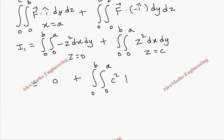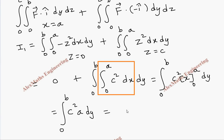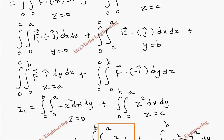Substituting z=c, the second part becomes double integral from 0 to a, 0 to b of c² dx dy. Integrating with respect to x first gives integral from 0 to b of c²·x evaluated from 0 to a, which is c²a. Then integrating with respect to y gives c²a·y from 0 to b, yielding I1 = c²ab.